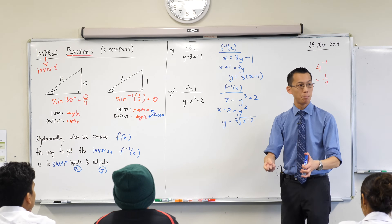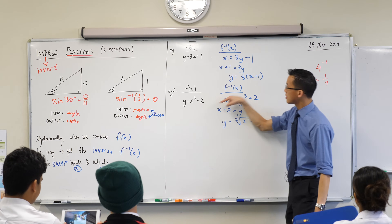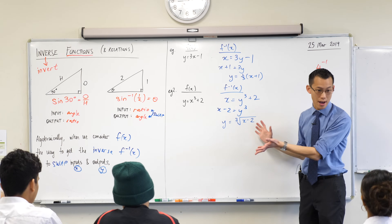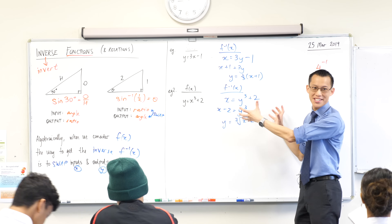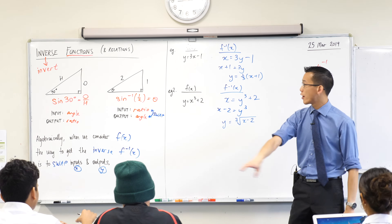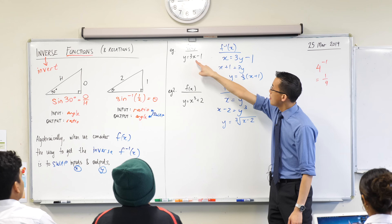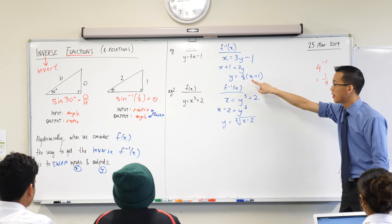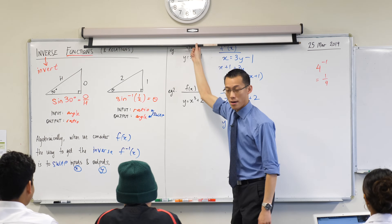I asked you at the beginning to pull open Desmos, so if you haven't already, do that now. We've done some algebra that's nice, but I want to see what's going on because there's an important visual relationship between a function and its inverse that I want to get at. Once you've got Desmos open, can you graph the first example — input the first function and also input its inverse? You should have them written down by now.